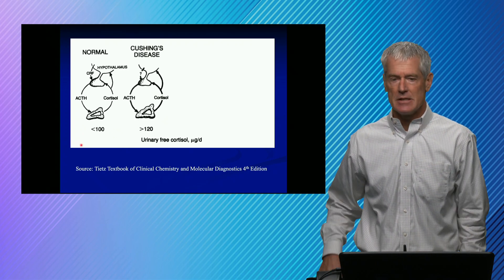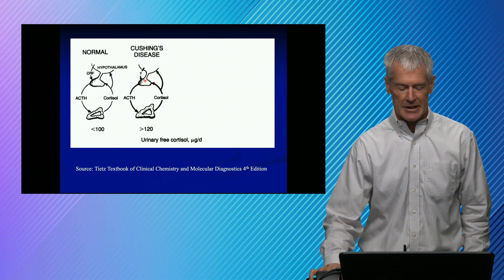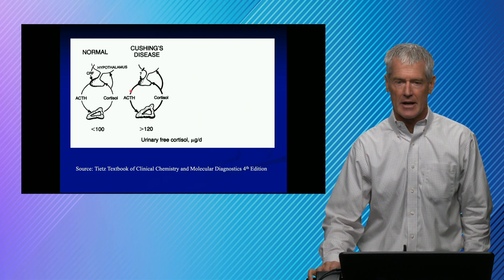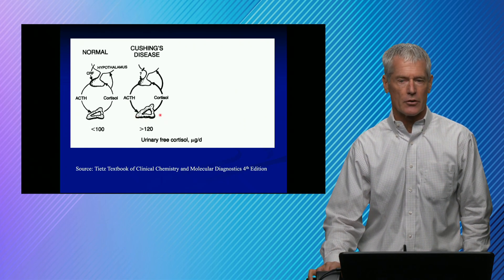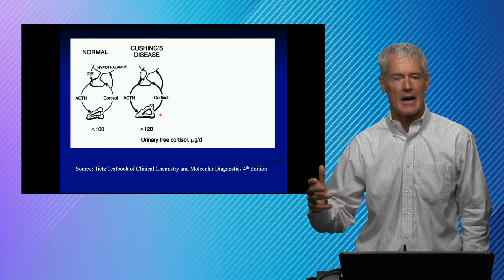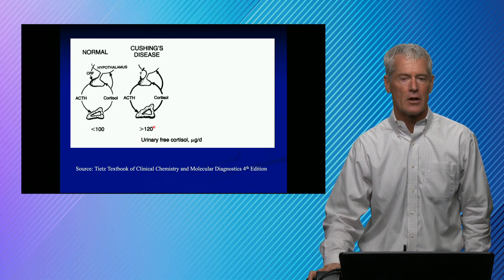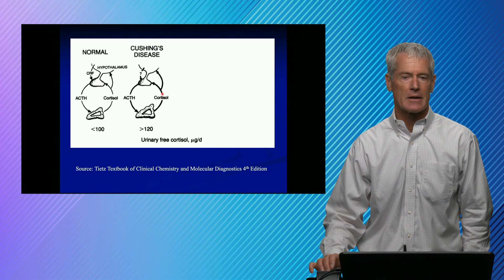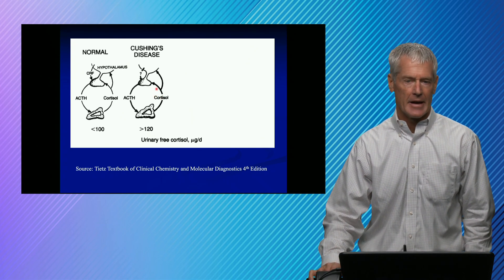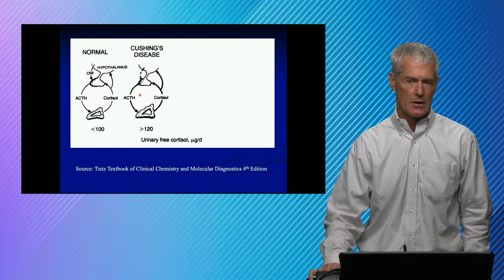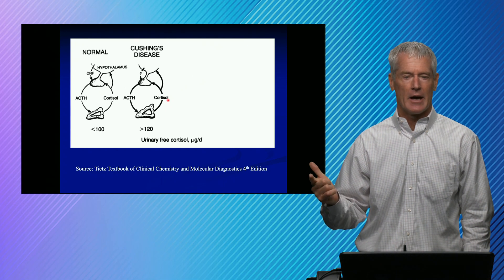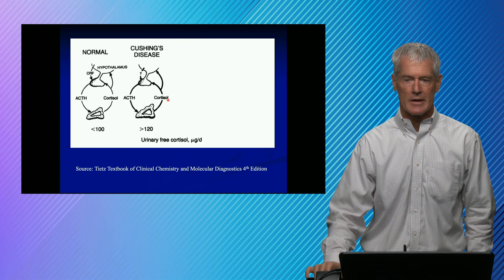In Cushing's disease, there's a lesion in the pituitary that's secreting too much ACTH — the ACTH line is thicker, acting on the adrenal gland. We're producing too much cortisol, saturating our CBG, and spilling it out into the urine, so urinary free cortisol is greater than 120 micrograms per day. The cortisol is feeding back, but it's not fully effective because that adenoma is not fully subject to the negative feedback of cortisol. We have elevation of both serum cortisol and urinary free cortisol, and the urinary free cortisol is quite distinct.